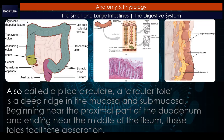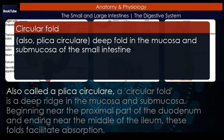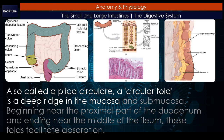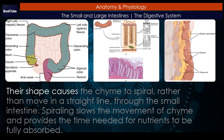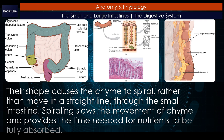Circular folds, also called plicae circulares. A circular fold is a deep ridge in the mucosa and submucosa. Beginning near the proximal part of the duodenum and ending near the middle of the ileum, these folds facilitate absorption. Their shape causes the chyme to spiral rather than move in a straight line through the small intestine. Spiraling slows the movement of chyme and provides the time needed for nutrients to be fully absorbed.